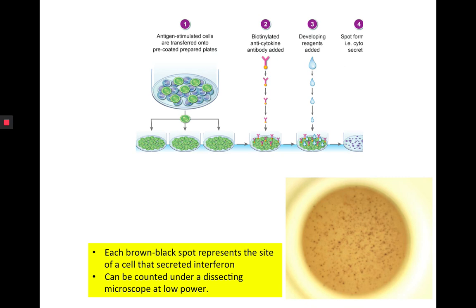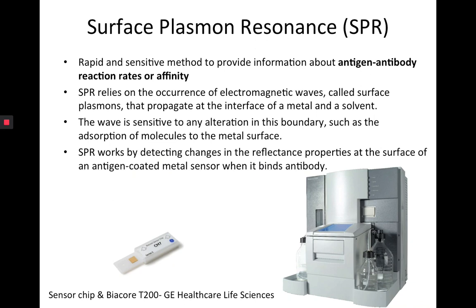Another method is a very fancy one called Surface Plasmon Resonance, or SPR. It's a rapid and sensitive method that also tells you about antigen-antibody reaction rates or affinity. SPR is usually used to measure small molecules as well as antigens and antibodies — it's one of the more sophisticated, more expensive, less common tools. SPR relies on electromagnetic waves called surface plasmons that propagate at the interface of a metal and a solvent.